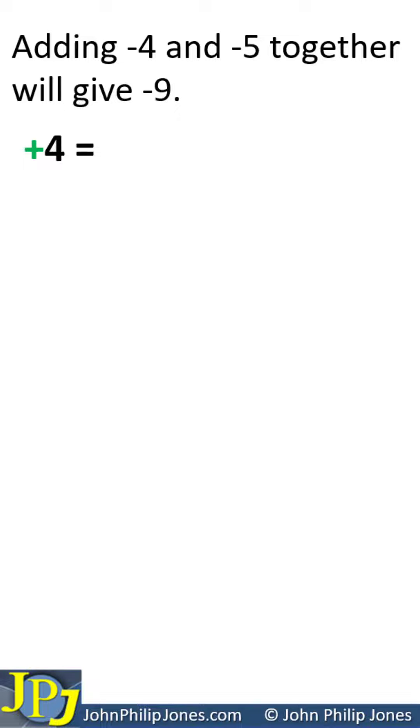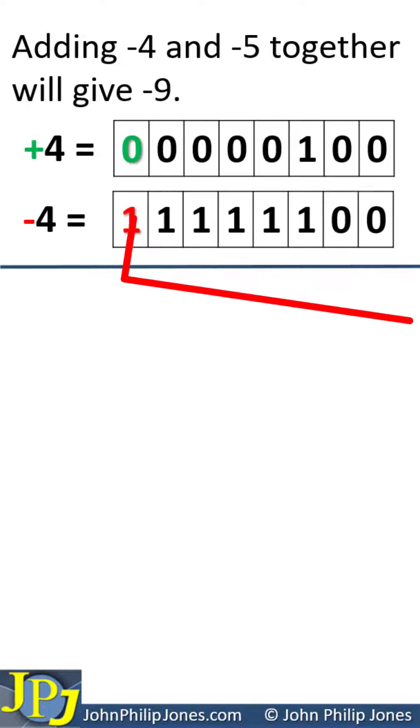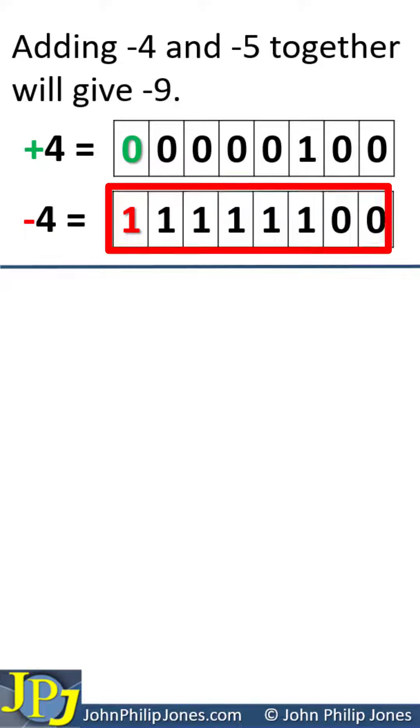We'll start by looking at plus 4 in a binary byte, as you can see here. I'll now take the 2's complement of this, which is shown here, and I've highlighted the sign bits in different colors.